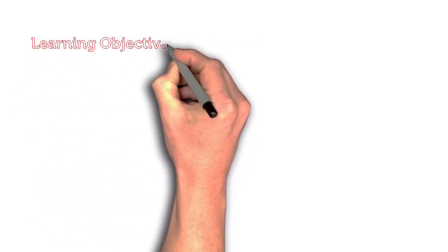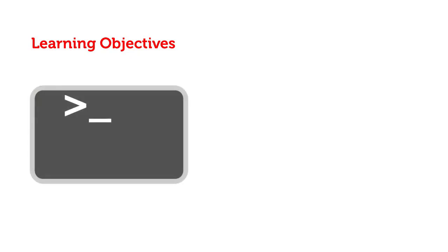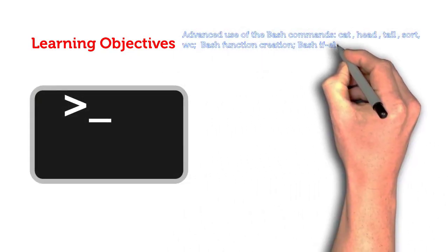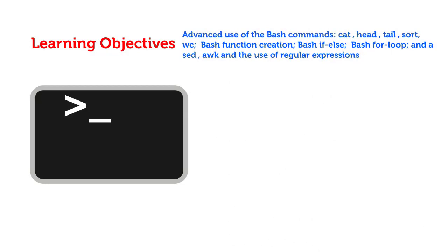Learning Objectives: By completing this project, you will learn to use the following bash commands — advanced use of cat, head, tail, sort, and wc. You will also learn bash function creation, bash if-else, bash for-loop, and the use of sed, awk, and regular expressions.